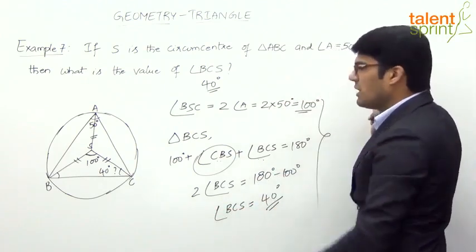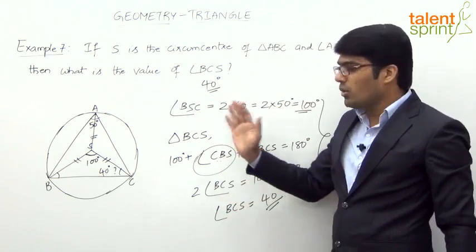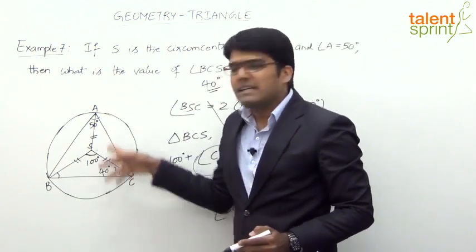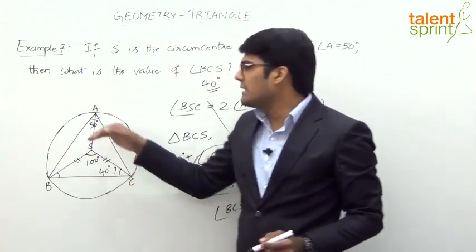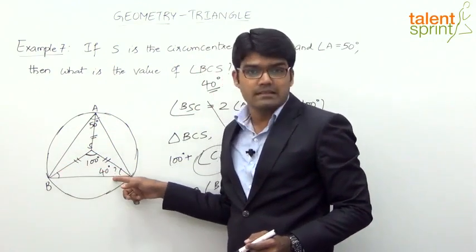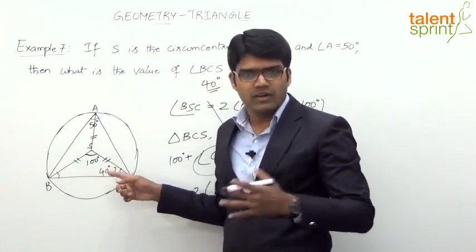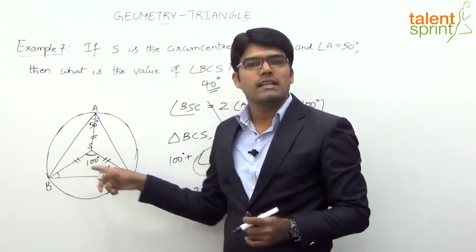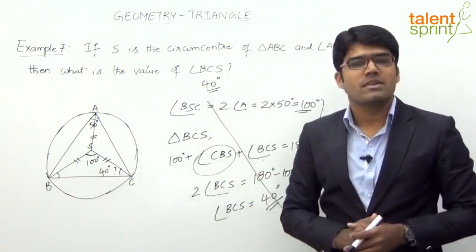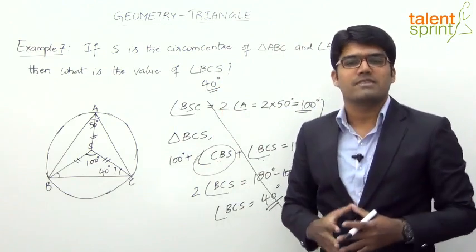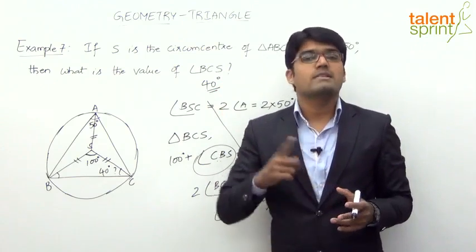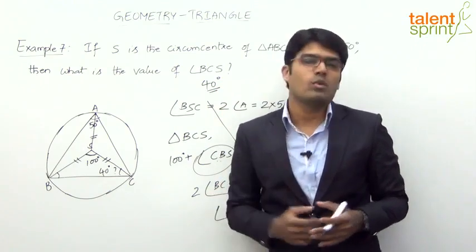That is how we put down the steps to get the required answer. But if you have understood the concept, you can do this mentally without writing any steps: if angle A is 50°, angle BSC must be 100°; the remaining two equal angles must sum to 80°, so each is 40°. The key point to remember: the angle made by any side with the circumcenter is 2 times the vertical angle.